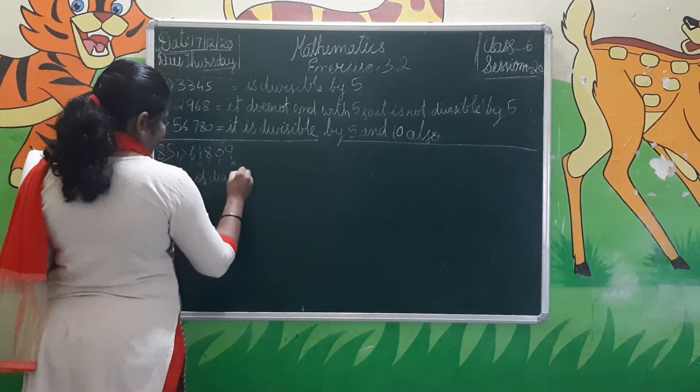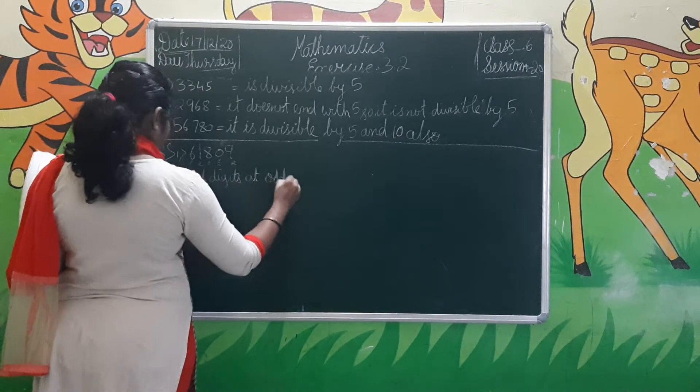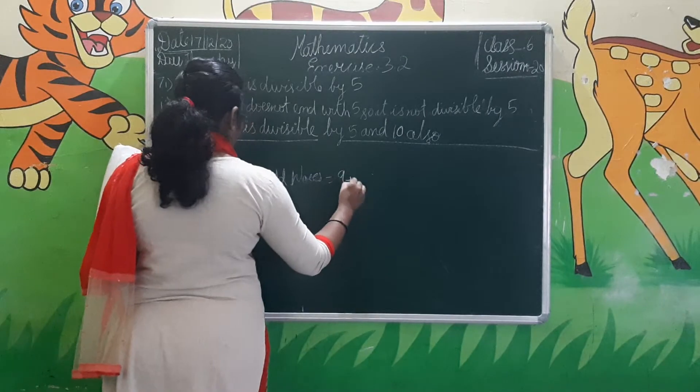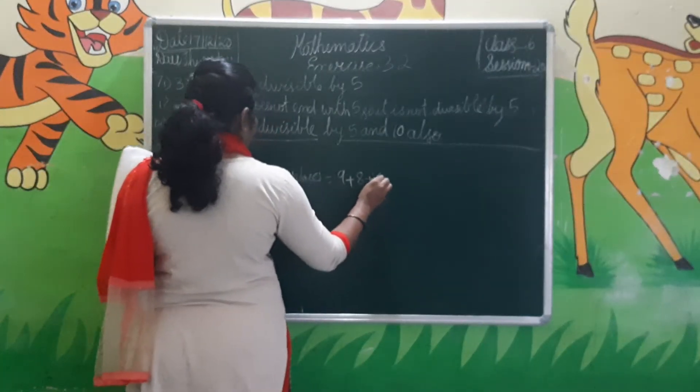In the first problem, the number is 61,809. Reading from right to left, label positions: odd, even, odd, even, odd. The digits in the odd places are 9, 8, and 6. Sum of odd-place digits: 9 + 8 + 6 = 23.